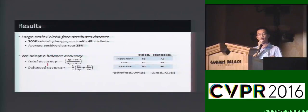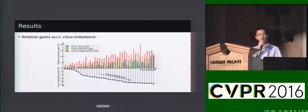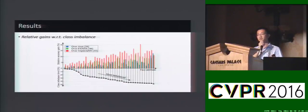We test our approach on the face attribute dataset, which has 40 attributes and each is highly imbalanced. We adopt both total accuracy and balanced accuracy as evaluation metrics. The table shows that our approach outperforms the traditional triplet method and the state-of-the-art ANET method on both metrics. This figure shows the overall relative gains across all face attributes — the more imbalanced the attribute, the more gains we tend to have.